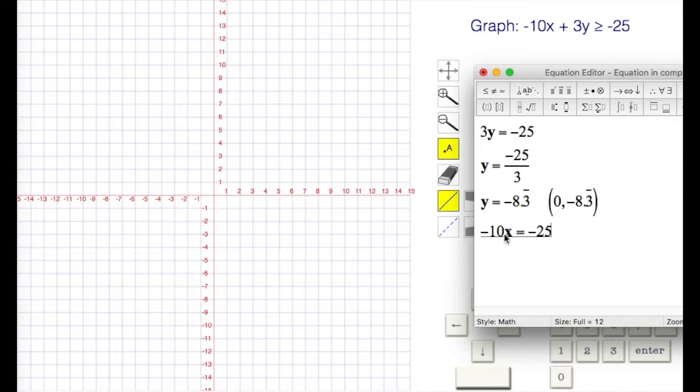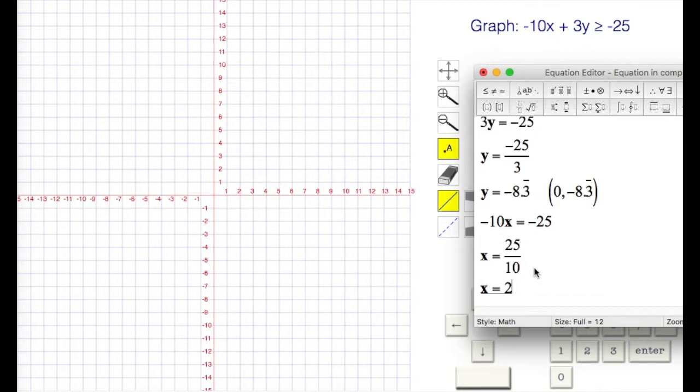Divide both sides by negative 10, and that gives us a negative divided by negative is a positive, 25 tenths, which is 2.5. x is equal to 2.5.